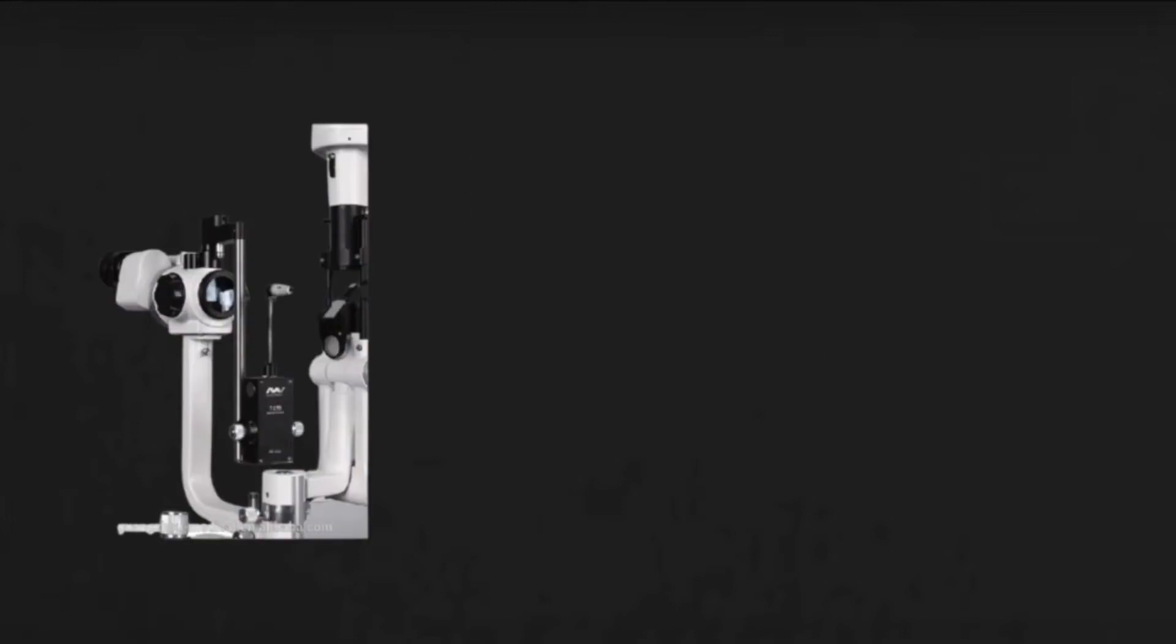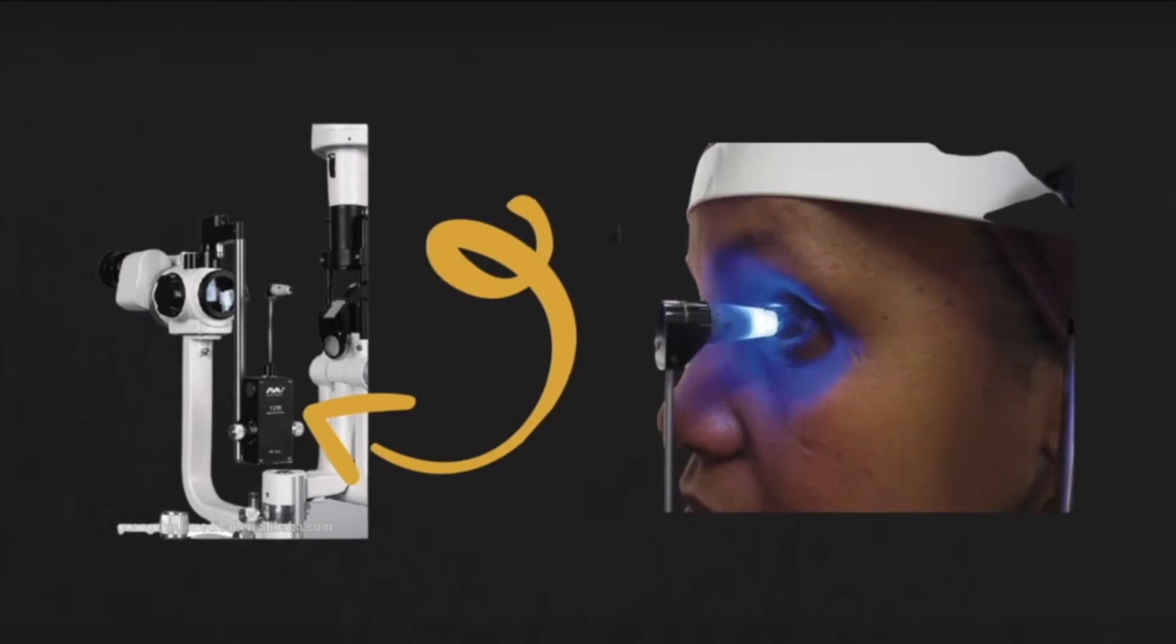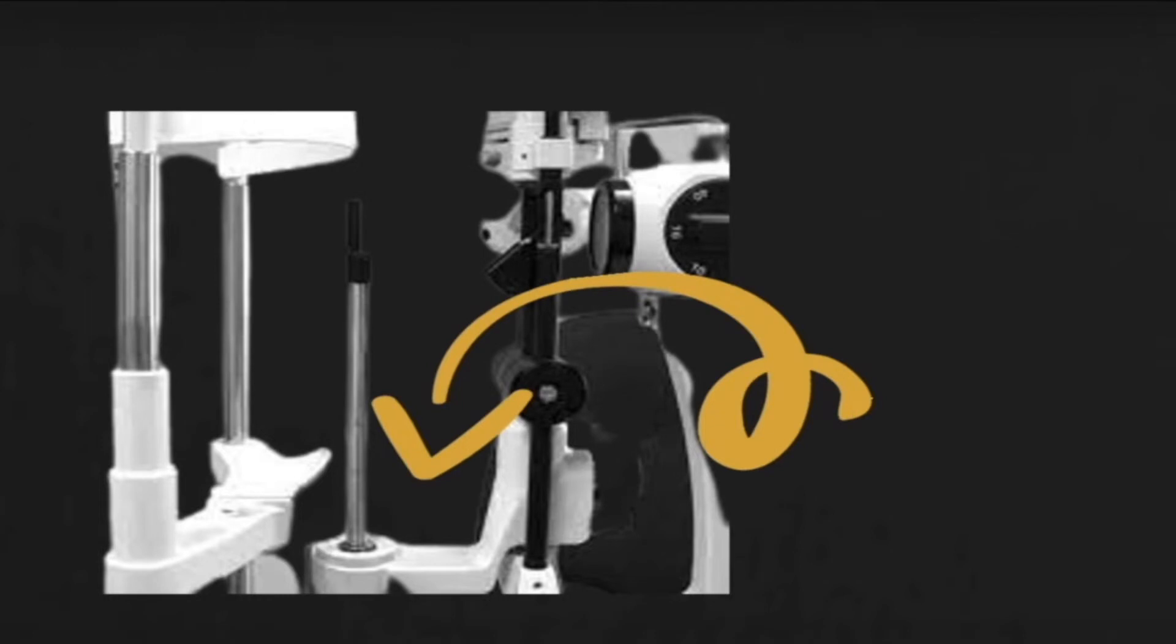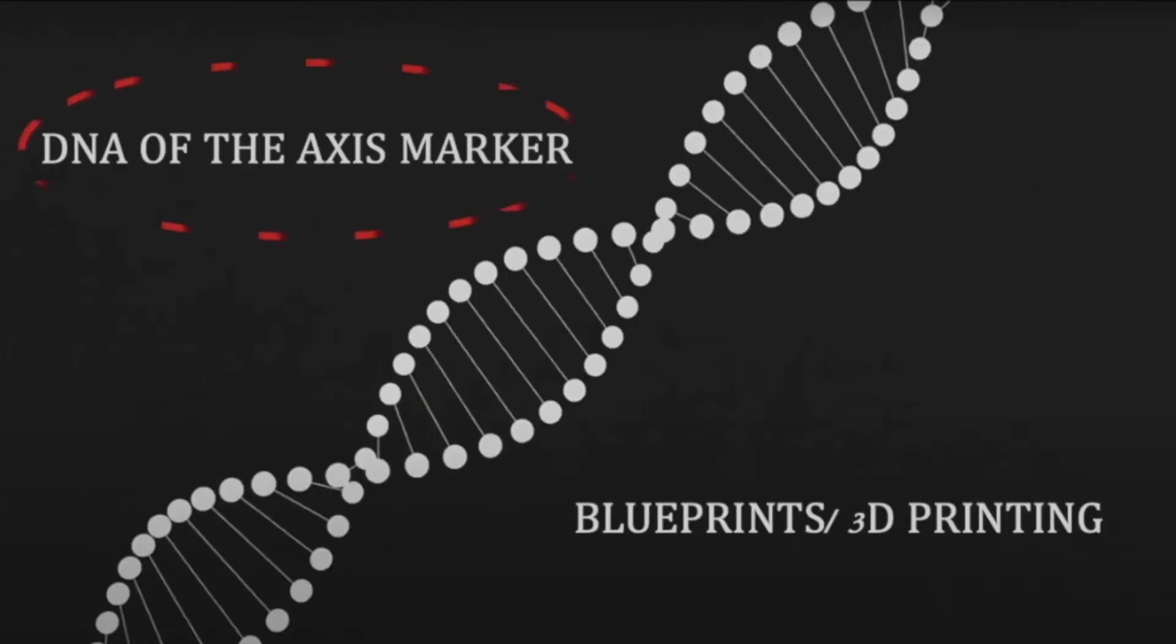So we had a research question: can we actually innovate an economical, accurate, stable, and easy to use toric marker? We took inspiration from the Goldman's applanation tonometer, which goes and indents the cornea of the patient and the patient is not hesitant at all. We decided to use the calibration slot which is universal in every slit lamp for our slit lamp-based toric marker.